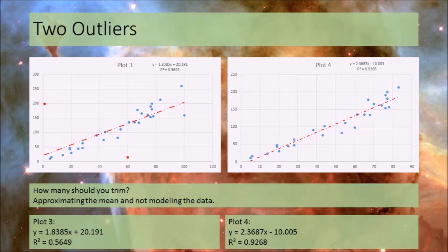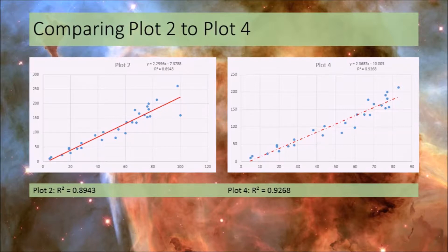If the outlier is actual data, you should keep it in the model — one reason being there could be a subpopulation. Then the question arises: how many outliers do you trim? You can trim one outlier and get an R-squared of 0.8943, but trim two outliers and it increases to 0.9268. Clearly the more you trim, the better the fit. This is when rule-based trimming comes into play — using one or two standard deviations, or capping at half a percent or one percent on top and bottom — to prevent over-trimming or under-trimming.